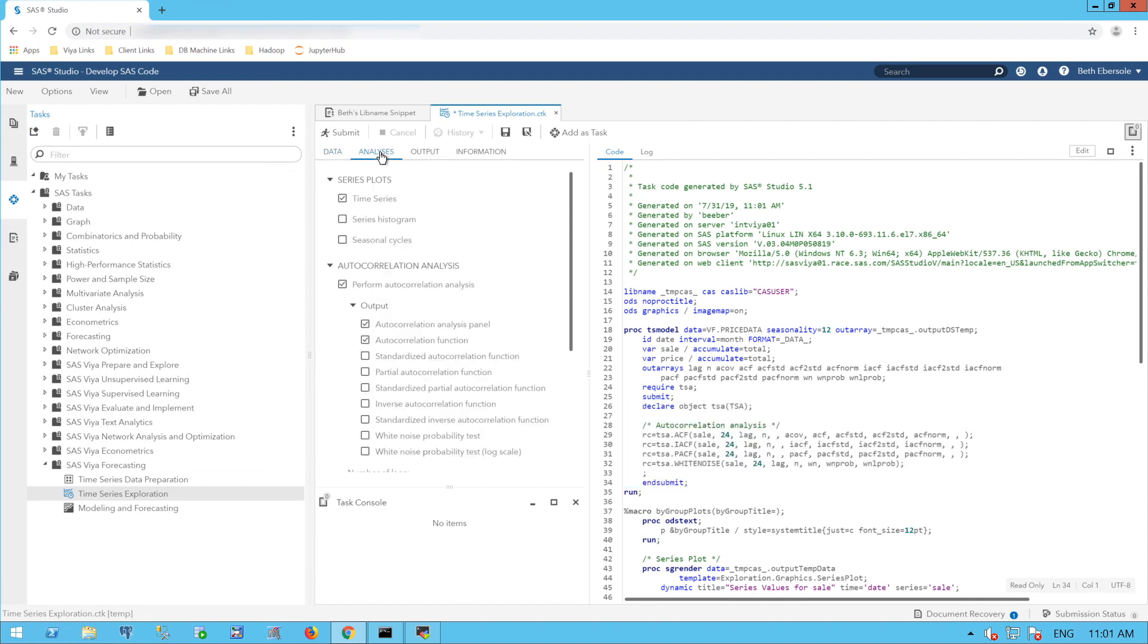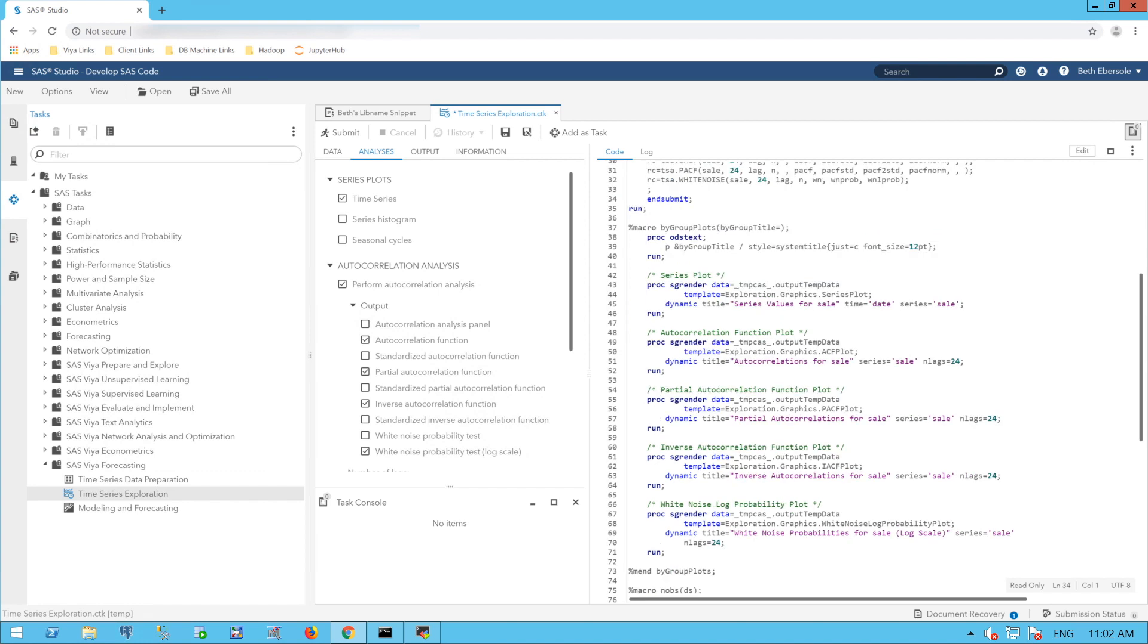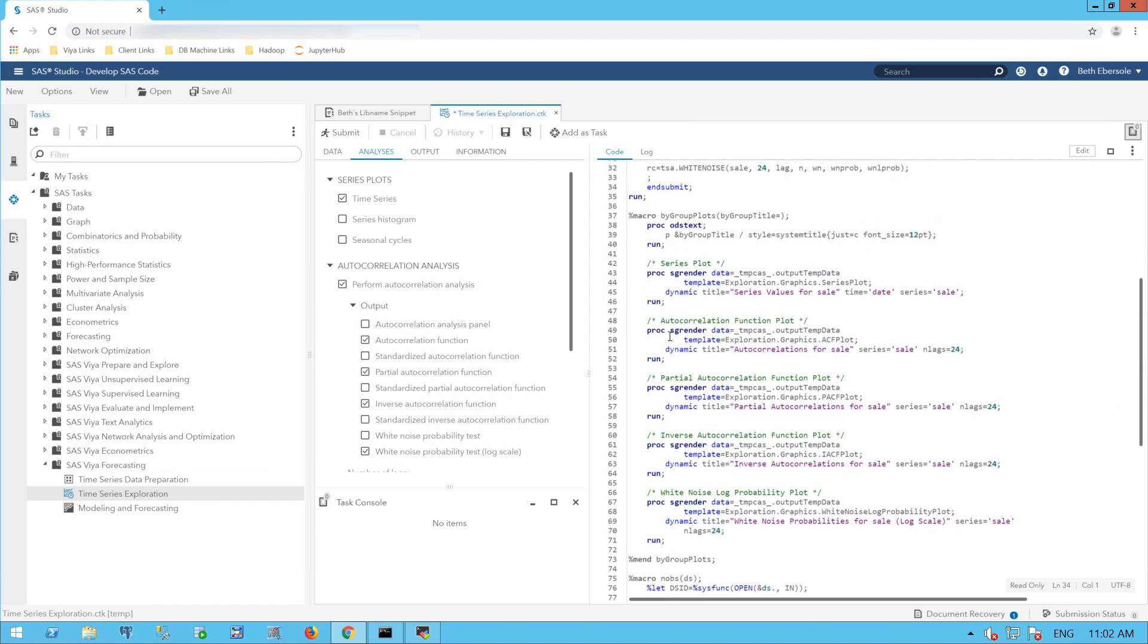Now I'll go to my Analyses tab. I see that my time series plot is already selected. I see that my Perform autocorrelation analysis is already selected. I'll deselect my autocorrelation analysis panel and individually select what I want. I'll take my autocorrelation function, my partial autocorrelation function, inverse autocorrelation function, and my white noise probability test on a log scale.